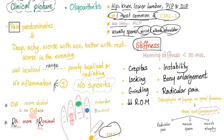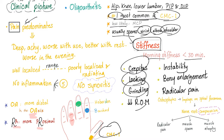Sometimes you can have stiffness, but since it's non-inflammatory, pain predominates rather than stiffness. When stiffness is present, it lasts less than 30 minutes in the morning. You can also have crepitus, locking, grinding, decreased range of motion, instability, and bony enlargement — remember, the osteophytes. There can also be radicular pain.